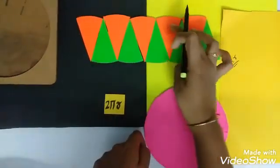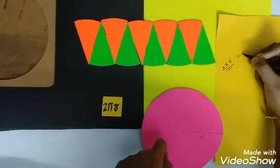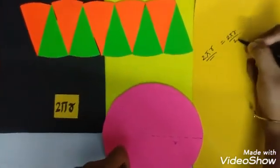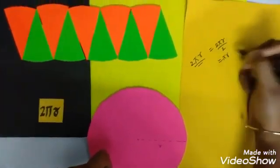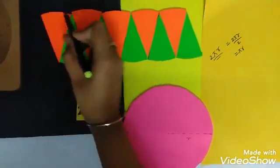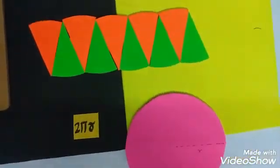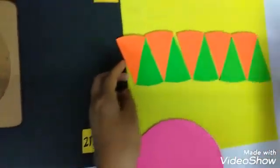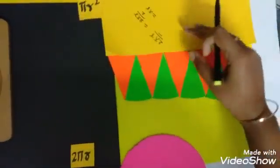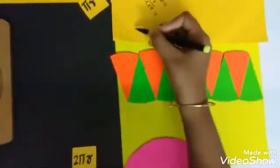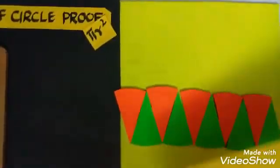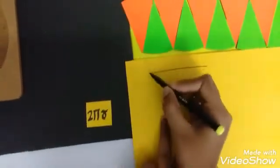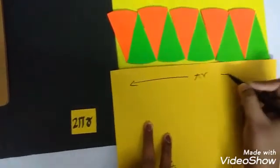So this whole length is 2 pi r divided by 2 is equal to pi r, right? So the whole length of this side is pi r. This whole length is pi r.